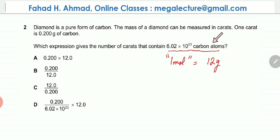So when you have 6.02 × 10²³ atoms, you basically have 12 grams of carbon atoms. Now we're going to use ratios: 0.2 grams is equal to 1 carat. That information is already given—1 carat equals 0.2 grams.